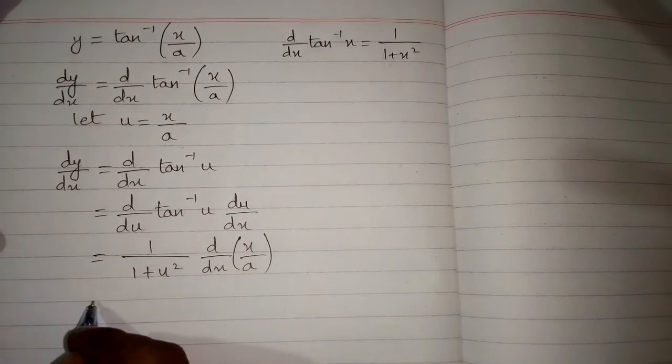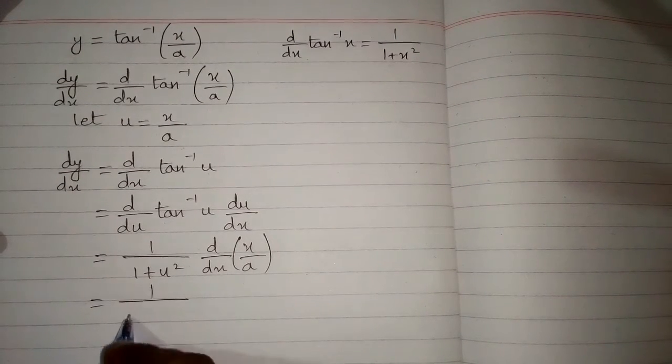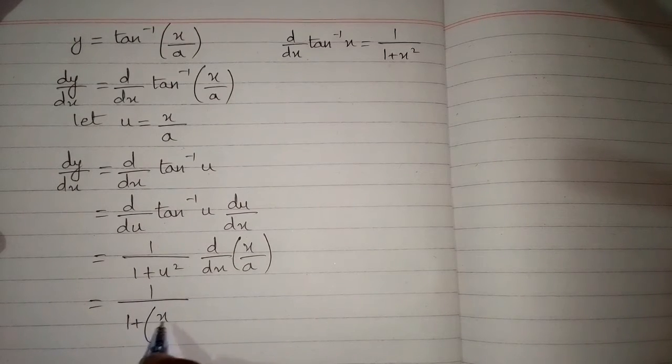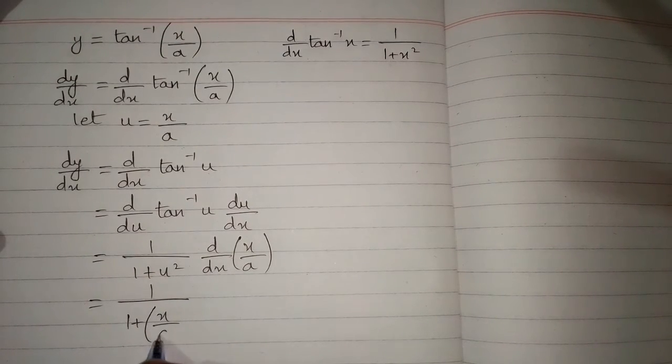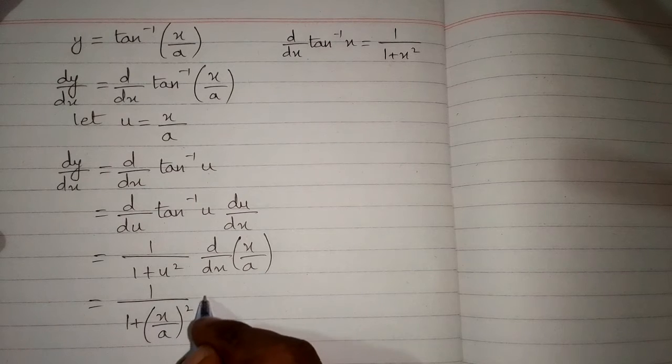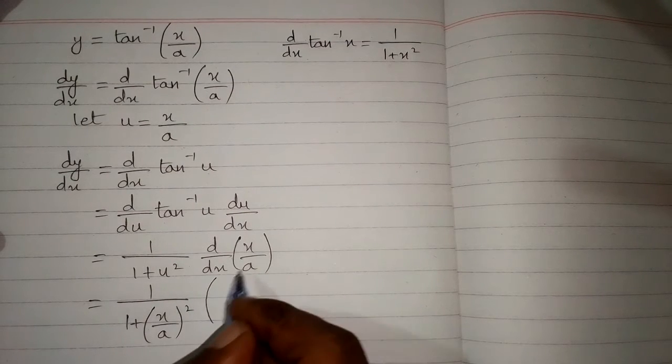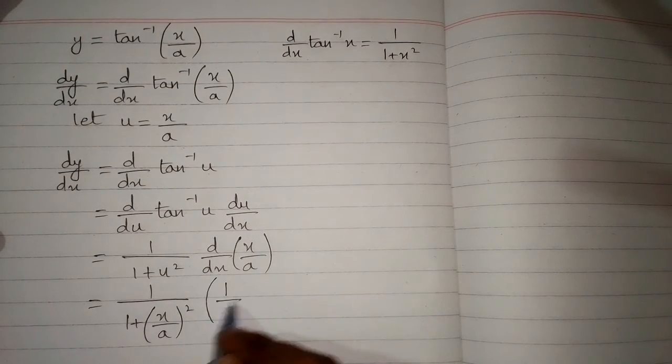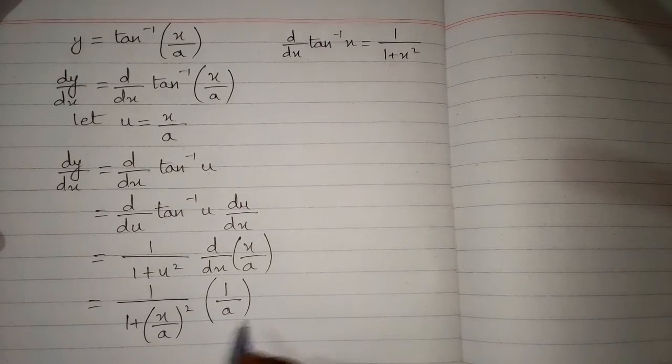Now we put the value of u over here. So we have 1 upon 1 plus x upon a whole square, multiplied by the derivative of x is 1, and the a will remain same.